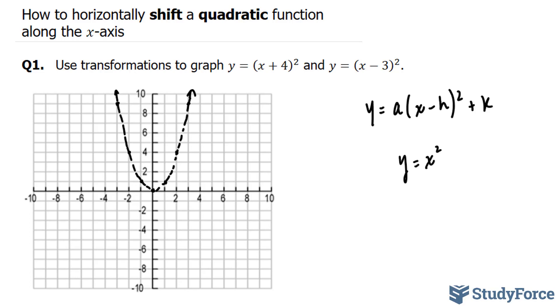Our first equation, which I'm going to represent in pink, is y = (x + 4)². Now if you ever run into a situation where you have x and a number being added or subtracted to it, what this will do—this number here—is it will horizontally translate the parabola.